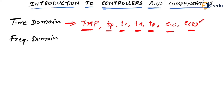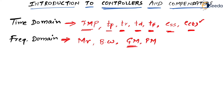Similarly, after frequency domain analysis, we have seen that the same system will have some frequency domain specifications as well. Those parameters were MR and bandwidth. Then we also had GM and PM — GM is the gain margin and PM is the phase margin.